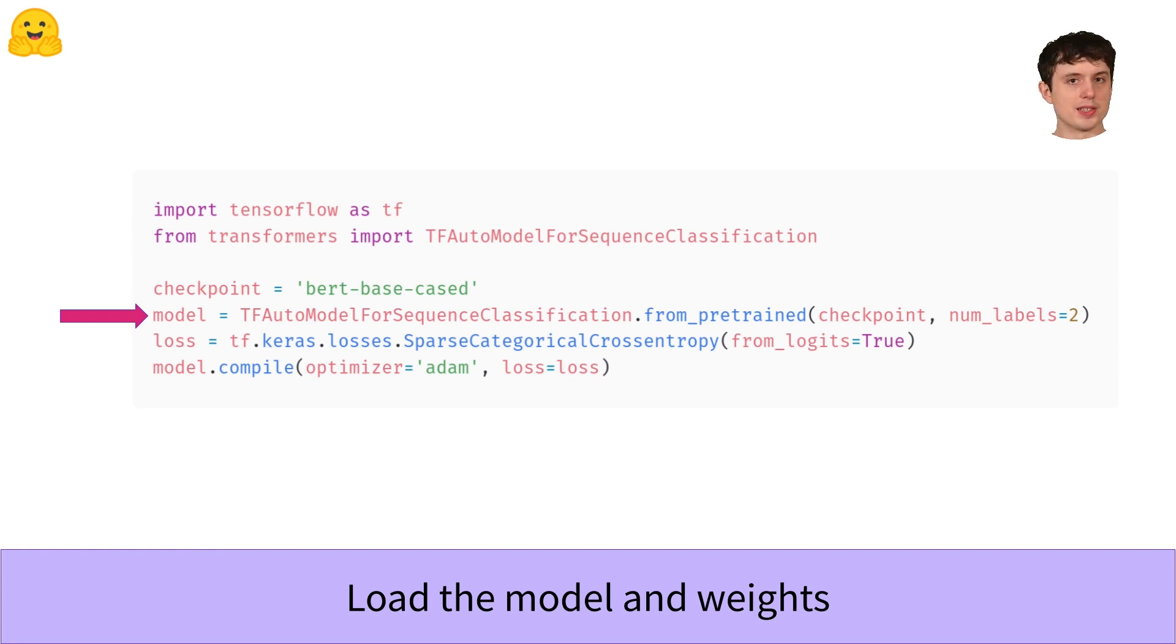So this line of code loads BERT, which is a general purpose language model. It loads its weights, architecture and all, and then adds a new sequence classification head onto it with randomly initialized weights.